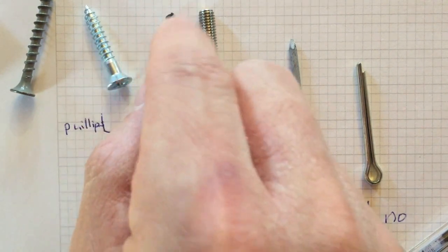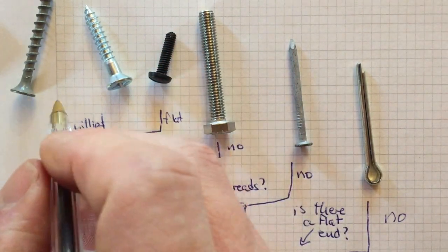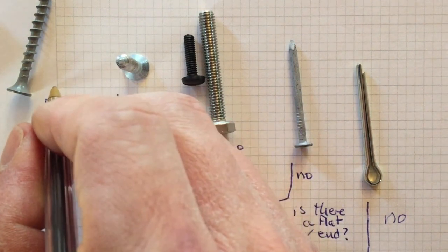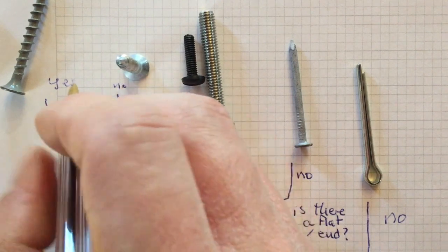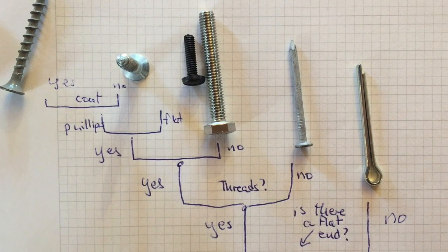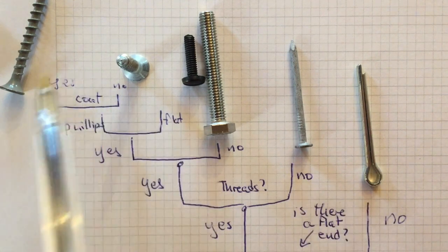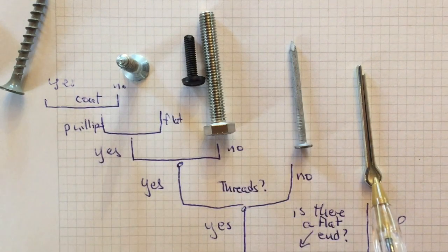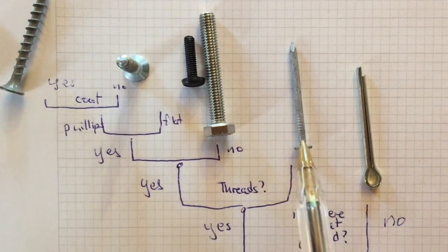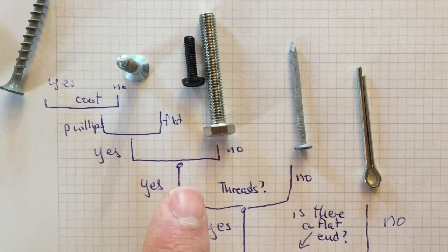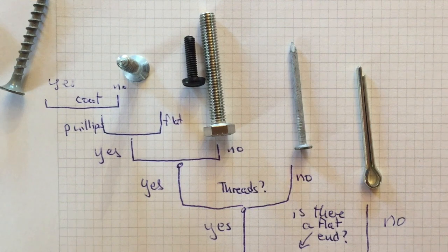By doing this, we've built our tree. We're saying the cotter pin is the most dissimilar from any of the others. All the others are more closely related to each other than to the cotter pin. All the ones with threads are more closely related to each other than to the nail. Now, the order in which we ask these questions is really, really important, as are the questions themselves.